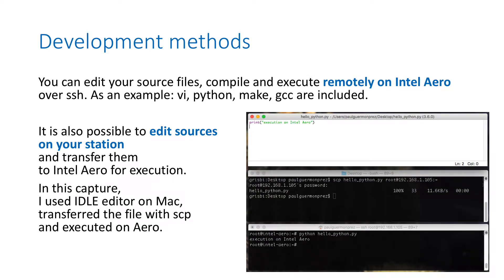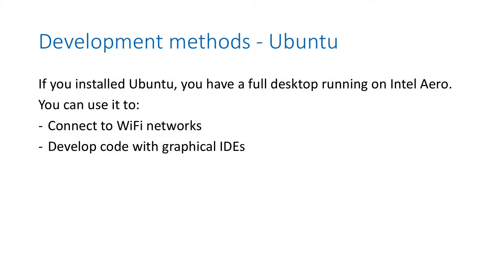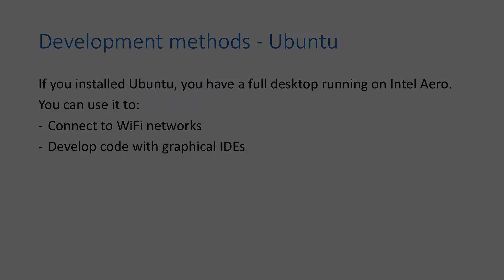Next you'll want to start coding, compiling, and executing. You have the choice between editing locally on Intel Aero over SSH, or editing on your computer and transferring the files. By default, vim is installed on Yocto. On Ubuntu it's different because you have a full desktop installed on Aero, so you have a graphical user interface running on screen and can launch a graphical development environment directly on Aero with a screen, keyboard, and mouse connected.